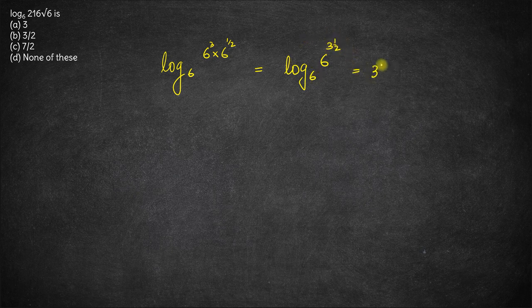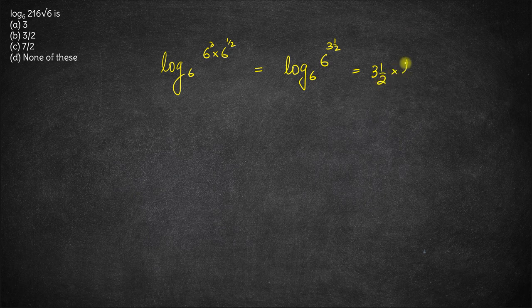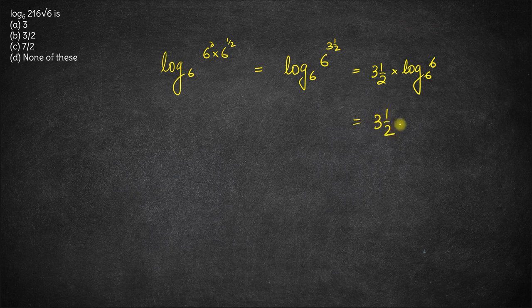This power comes out and gets multiplied. So we get 3 and a half times log of 6 base 6. Log 6 base 6 is 1, so this becomes 3 and a half.